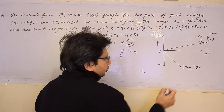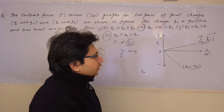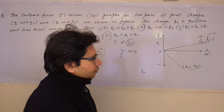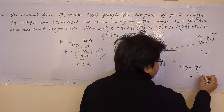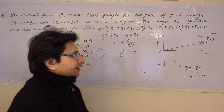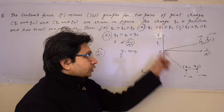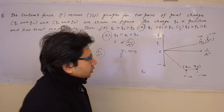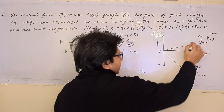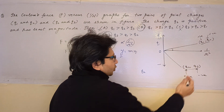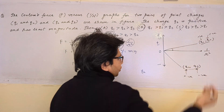For the pair q2 and q3, F is negative, meaning an attractive force. Attractive force is only possible when charges are opposite in nature. Since q2 is positive, q3 must be a negative charge. Focusing on magnitudes, the slope for the pair q2 and q3 is larger compared to the slope for the pair q1 and q2, as clearly seen from the graph.